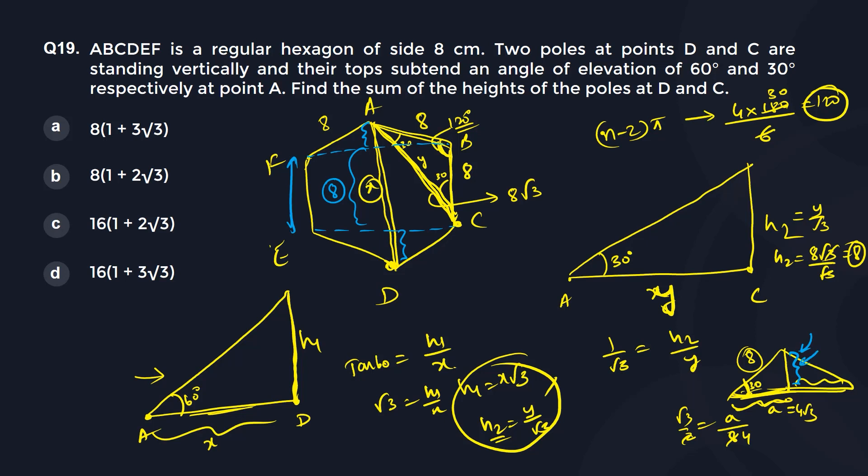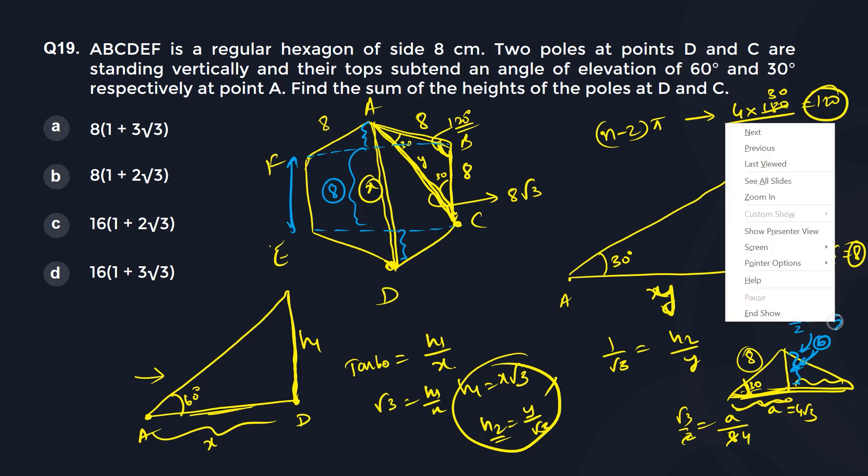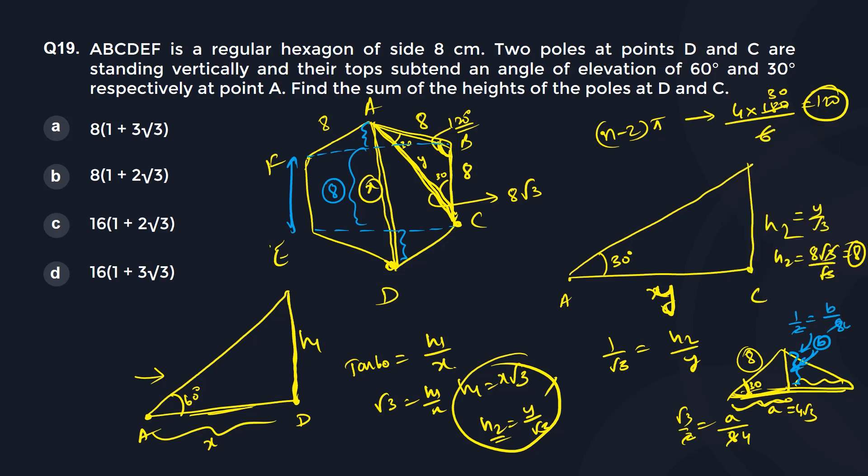Once again I can use sine 30. Sine 30 is 1 by 2. Sine 30 is opposite side. So let us call this as b. This opposite side is b. This one is b. So b by hypotenuse, b by 8. So your b is 4. If your b is 4, so this is 4, this is 4, plus another 8. So 8 plus 8 is 16. So your x is 16.